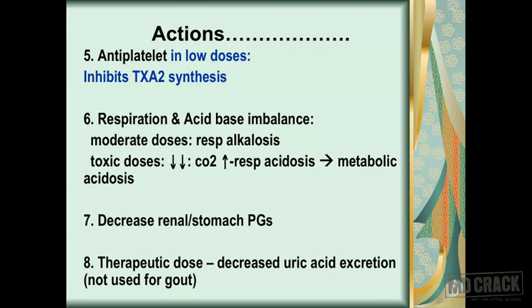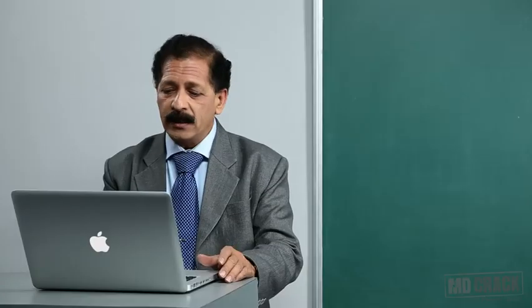The final effect of salicylates in larger doses leads to acidosis — remember the keyword: metabolic and respiratory acidosis. Aspirin also decreases renal and stomach prostaglandins. The cytoprotective prostaglandins in the stomach are inhibited because aspirin inhibits both COX-1 and COX-2. In therapeutic doses, aspirin decreases uric acid excretion, causing uric acid to accumulate — this is why aspirin is never used in the management of gout.